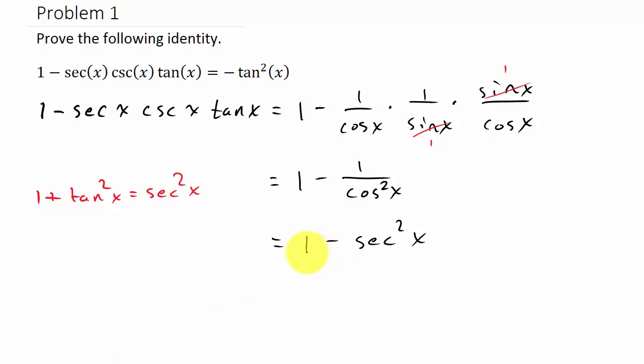Look what I have: one minus secant squared. If I subtract secant squared x and tangent squared x from both sides, that gives me one minus secant squared x equals negative tangent squared x.